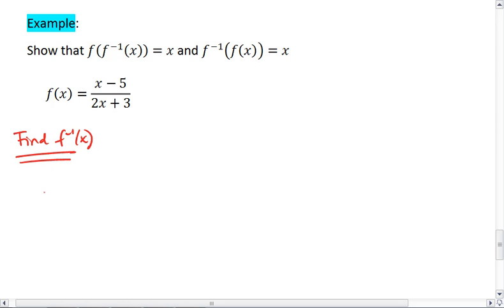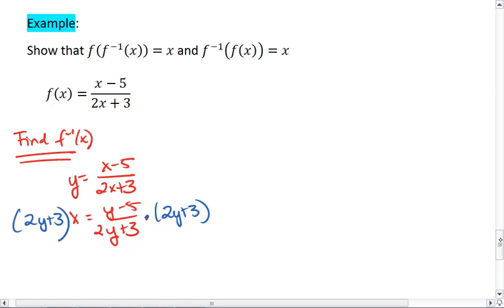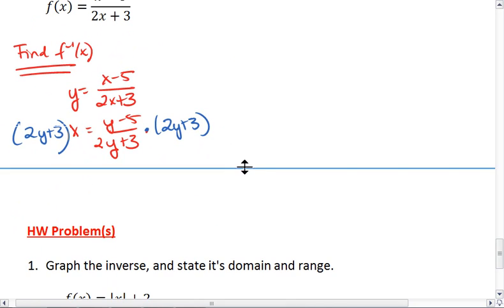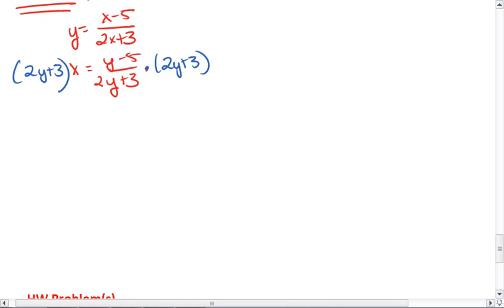We can follow our steps. We get y equals x minus 5 over 2x plus 3. Switch the x and y's. We then want to multiply both sides by 2y plus 3. That gives us 2y plus 3 times x equals y minus 5. Distribute your x.